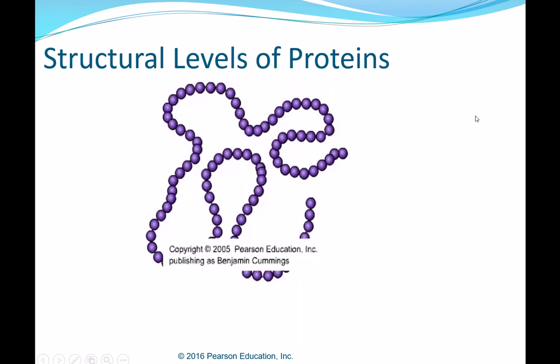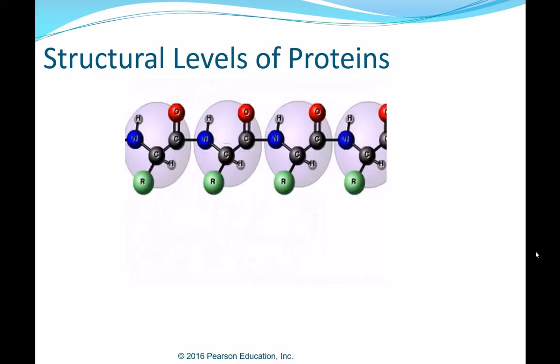The first level is primary structure. Each protein has a unique primary structure — a particular number and sequence of amino acids making up the polypeptide chain. Twenty different amino acids are used to build proteins. Theoretically, the amino acids could be linked in almost any sequence, forming an almost infinite variety of different proteins. This illustration shows some of the amino acids making up the primary structure of a protein.